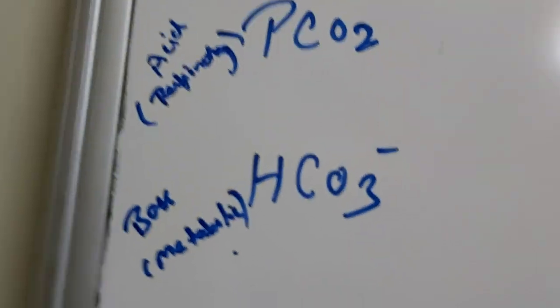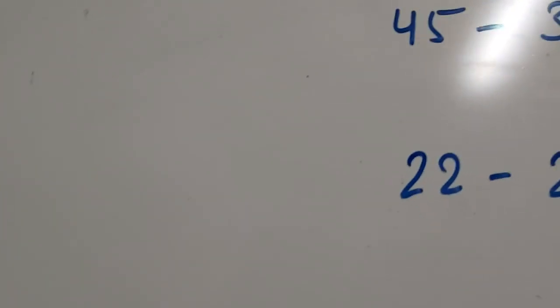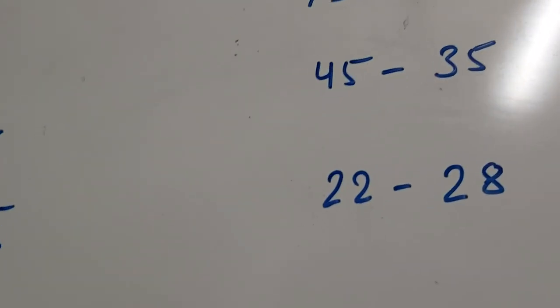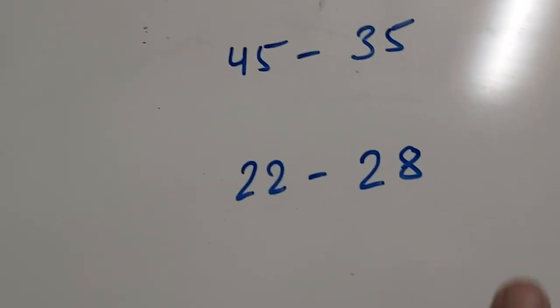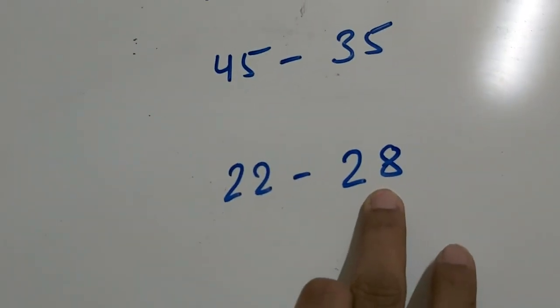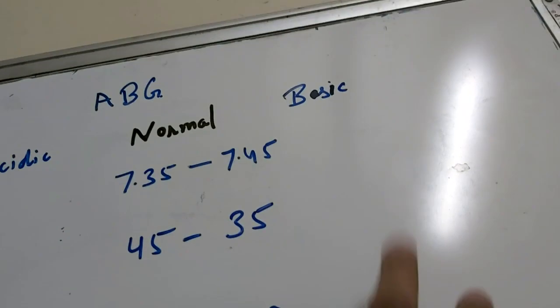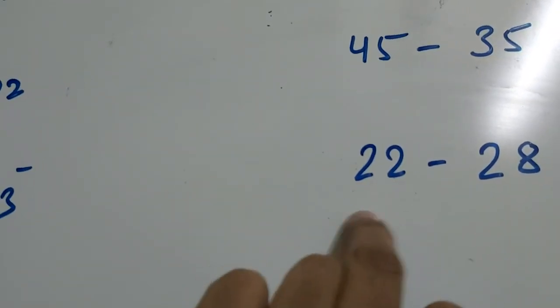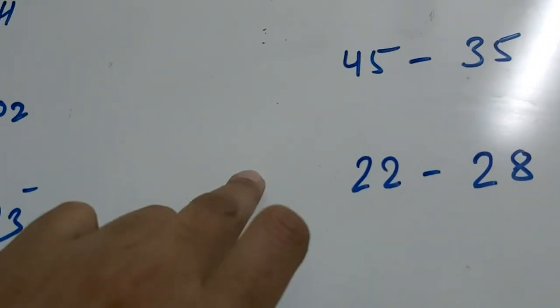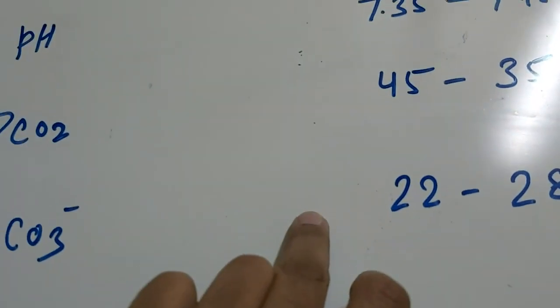Now coming to the bicarbonate, bicarbonate actually denotes the metabolic factor and it is a base. That is, if its value will increase than 28, then the condition will be alkalosis, it will be basic. And if its value is less than 22, then the condition will be acidic.